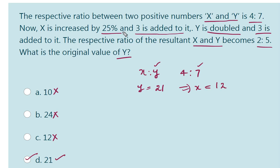Now X is increased by 25%. So what is the 25% of 12? 12 into 1 by 4, that is 3. So 12 plus 3, and one more 3 is added to it plus 3. Now the current value of X is 12 plus 3 equals 15, 15 plus 3 equals 18.